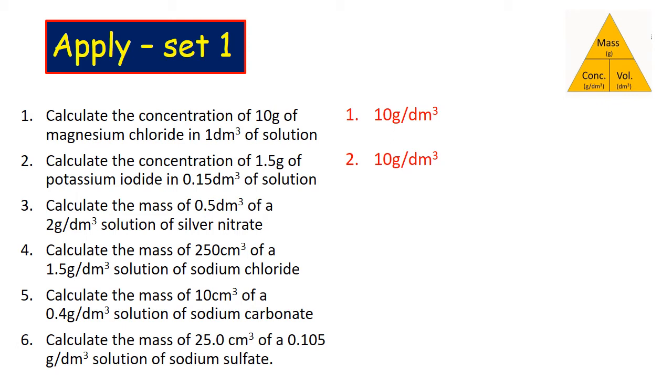I'm going to rearrange the equation now to calculate the mass of 0.5 dm³ of a 2 g/dm³ solution of silver nitrate. That gives me an answer of 1 gram.